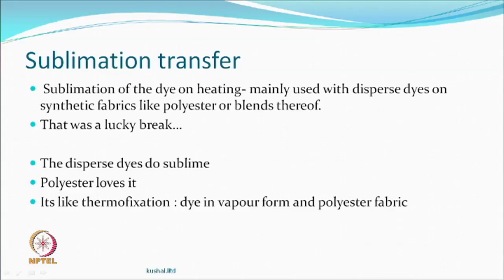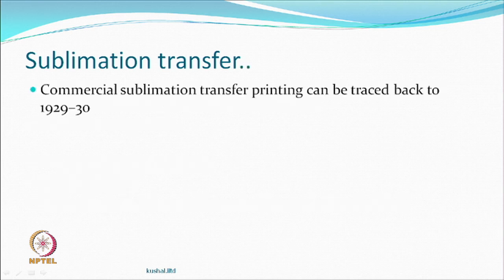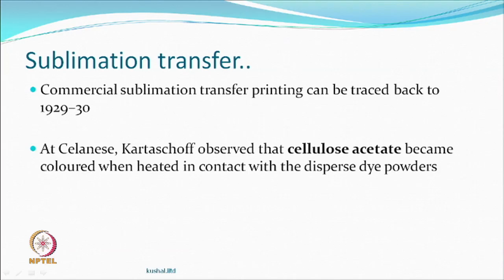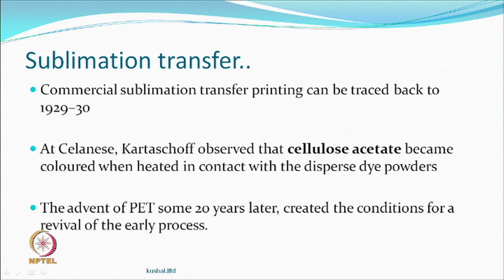People had been thinking about this concept as early as the 1930s. When cellulose acetate came into picture, some experiments - including accidental ones - showed that yes, diffusion can take place. Then the commercialization thought came for PET, but it took about 20 years. And actual commercialization and production would be even 10 years further after that. When this process came, people were forecasting that printed fabrics production would reach 1 to 2 billion meters by the 1980s - that was the kind of prediction.